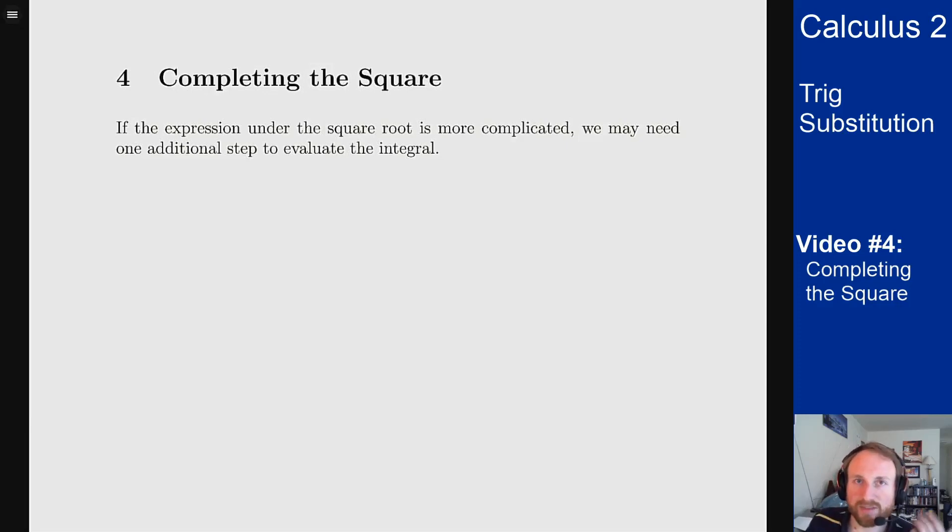So the issue with problems like this is you get an expression that's under a square root but it doesn't look like x squared minus a squared or x squared plus a squared or any of those forms that you can use trigonometric substitution on. However any quadratic that's under a square root or any form can be written in that form by completing the square.